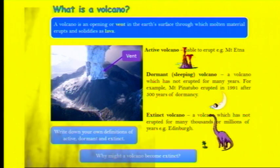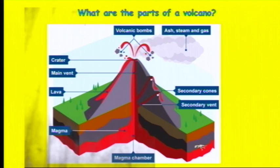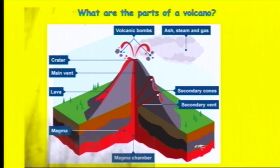Moving on to volcanoes — there are three types. Active volcanoes are liable to erupt, like Mount Etna in Italy. Dormant or sleeping volcanoes have not erupted for around a hundred years. Extinct volcanoes have not erupted for many thousands of years, like the one in Edinburgh. In terms of structure, the magma is held in the magma chamber at the base and centre of the volcano. If it erupts it travels up the main vent, coming out through secondary vents and cones or the main crater at the top. What comes out includes lava, volcanic bombs, ash, steam and gas — and if all of that comes out together it's called a pyroclastic flow.